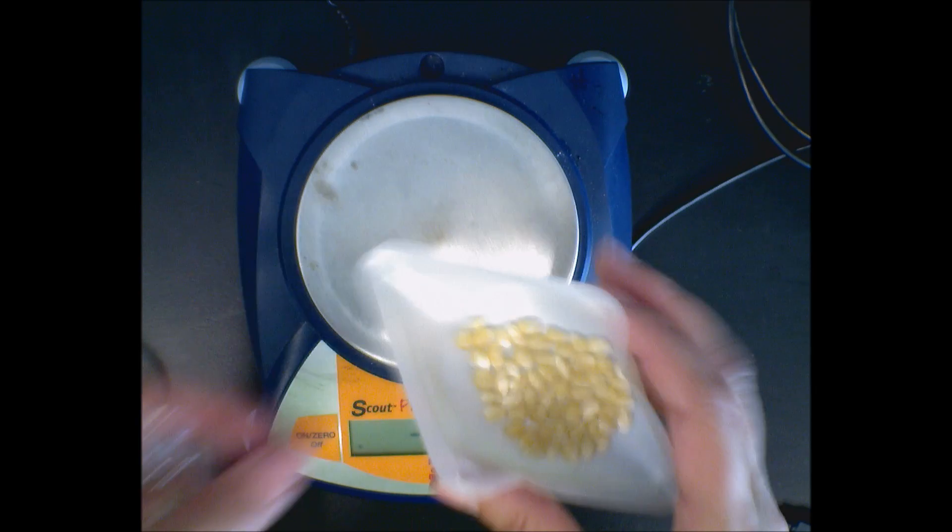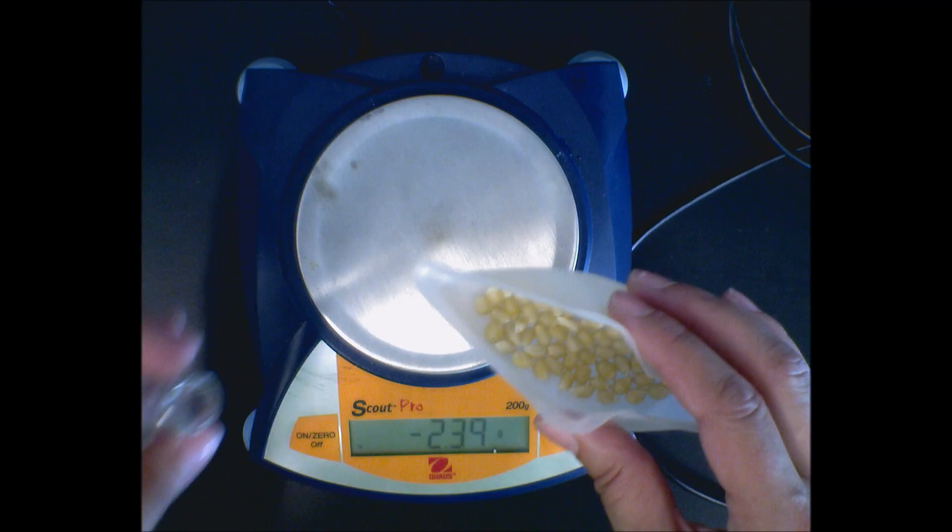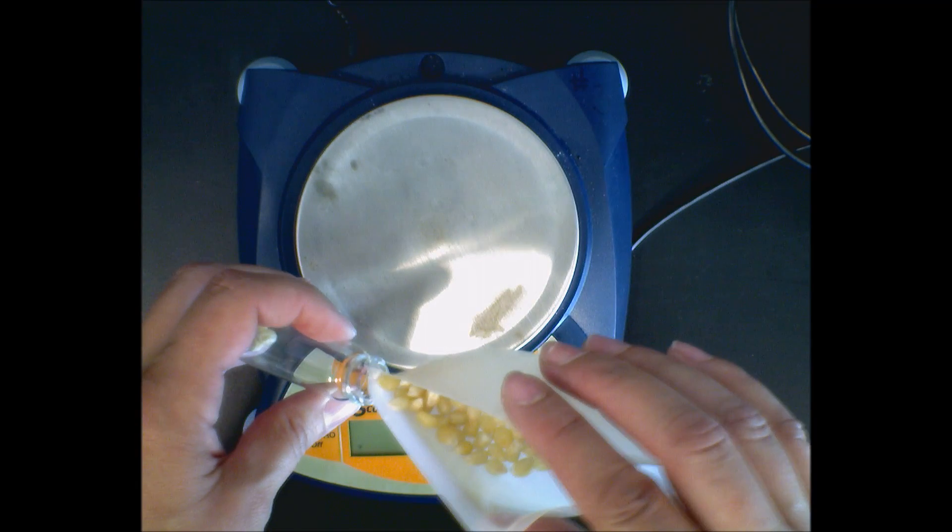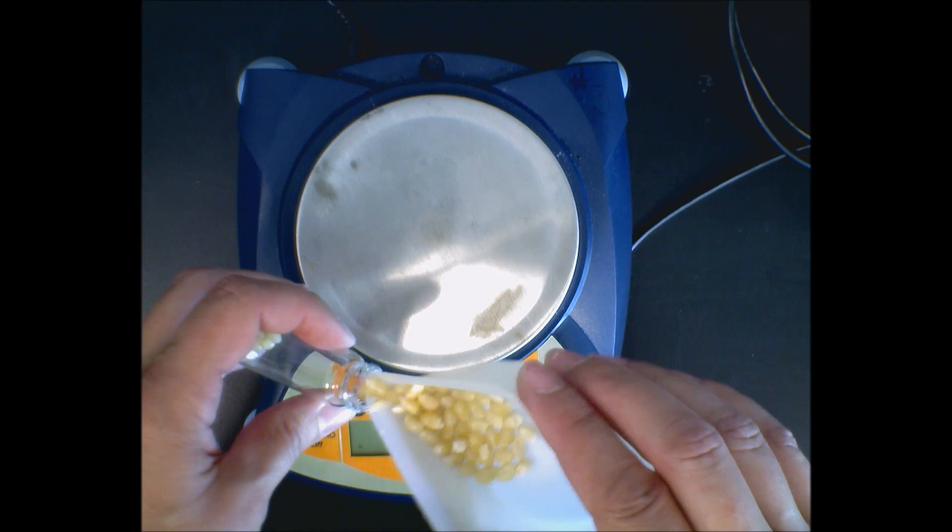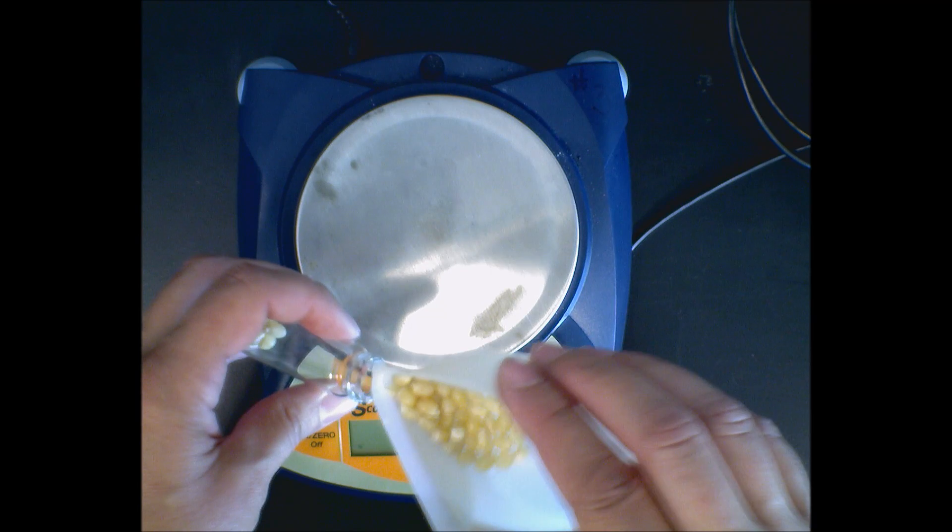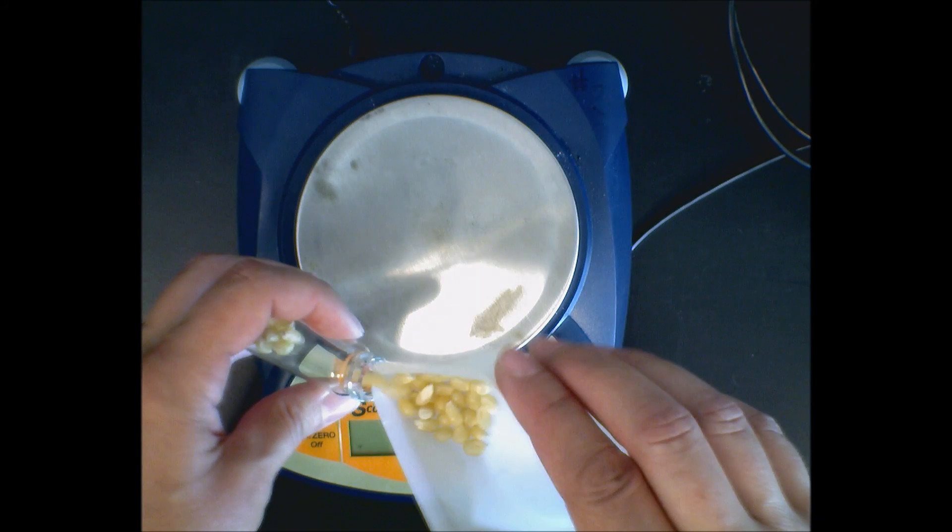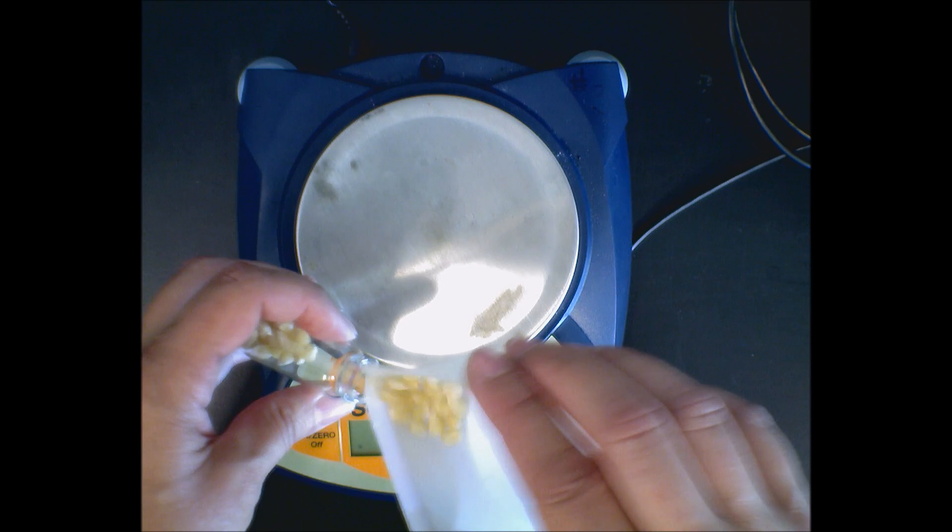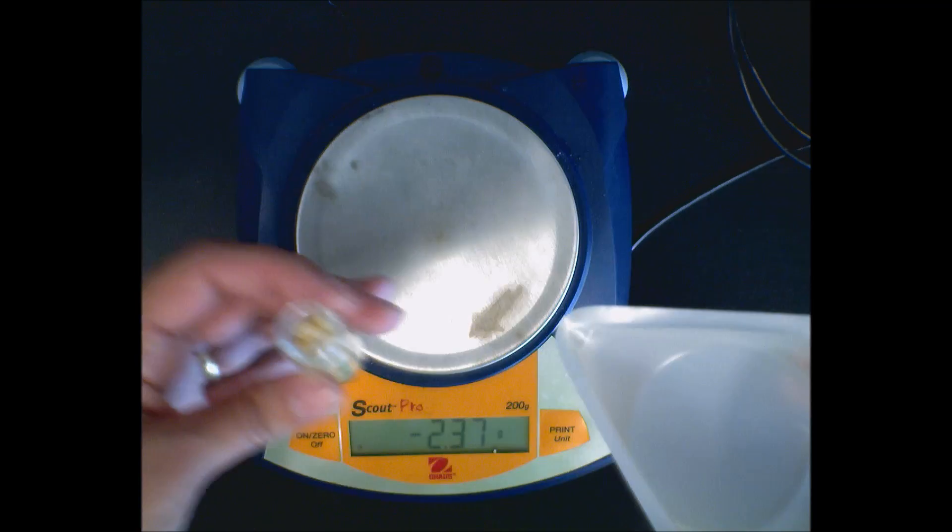Okay, now the weighing boats also have a nifty function of being able to fold so that you can then pour into narrow things if you need to. Notice I squish it and I can get that to go back in the container without a mess.